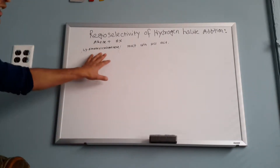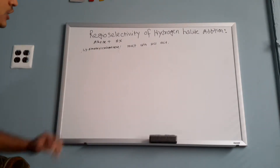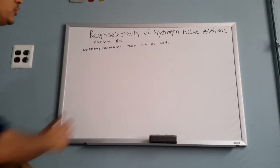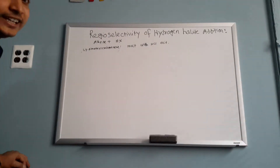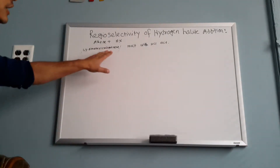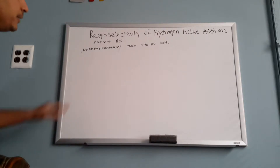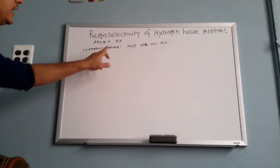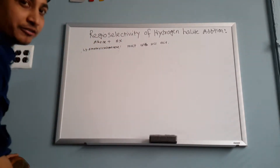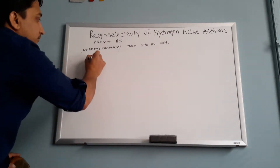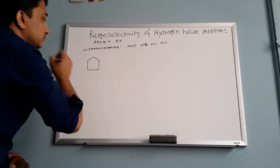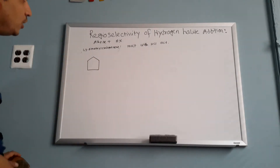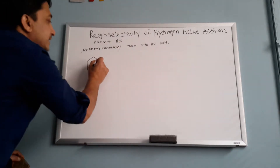First, you have to draw the structural formula for this compound. I'll show you the technique — how we can convert to the structural formula. It's very simple. It's cyclo, and it's pentene, which means how many carbons? Five. So this is my cyclopentene, and because it's pentene, it has a double bond.